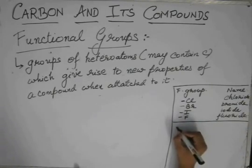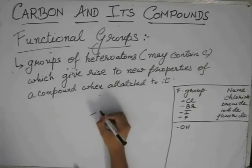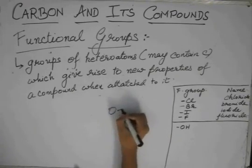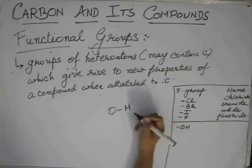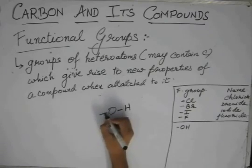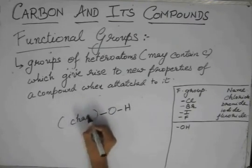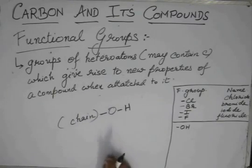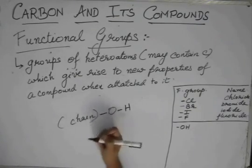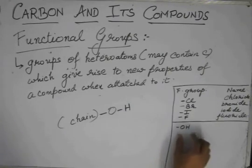we have a functional group OH. This OH is oxygen bonded to hydrogen. Hydrogen has one valency satisfied, but oxygen has only one valency satisfied. So, it uses one to bond with the chain or ring. So, this is the OH.